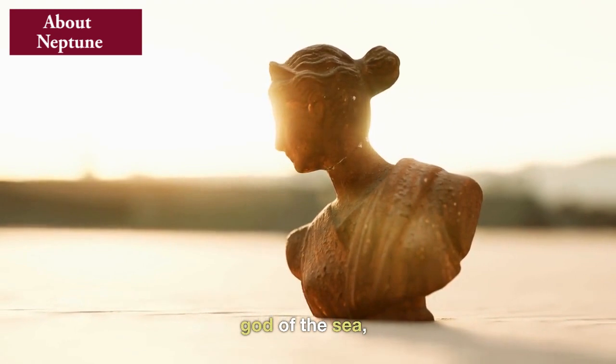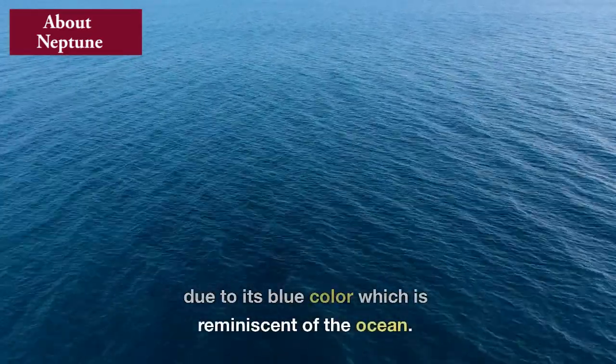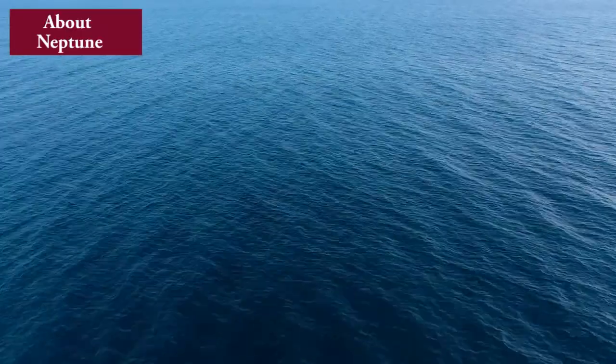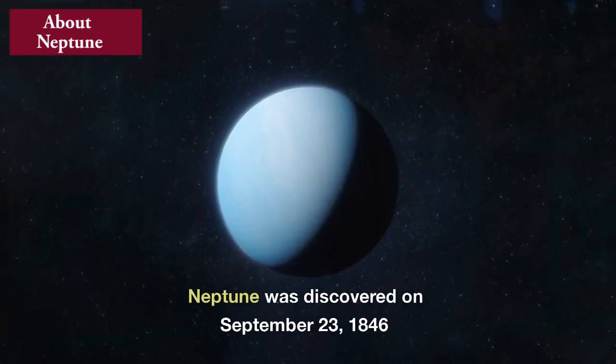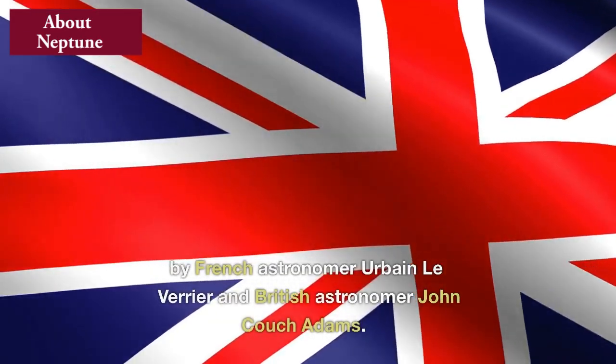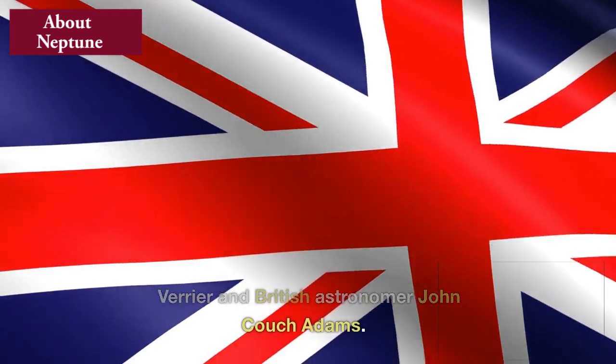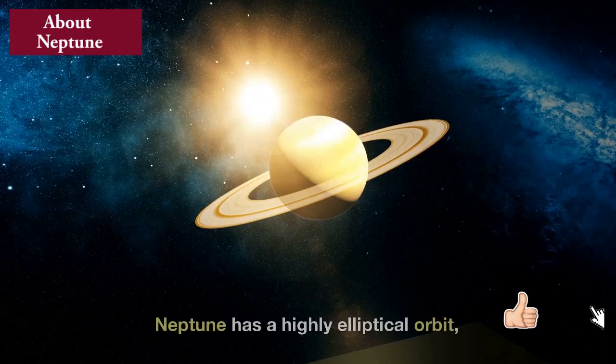Neptune was named after the Roman god of the sea due to its blue color, which is reminiscent of the ocean. Neptune was discovered on September 23rd, 1846, by French astronomer Urbain Le Verrier and British astronomer John Couch Adams.